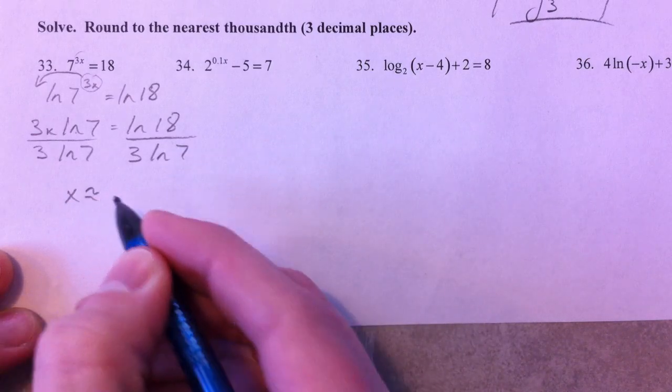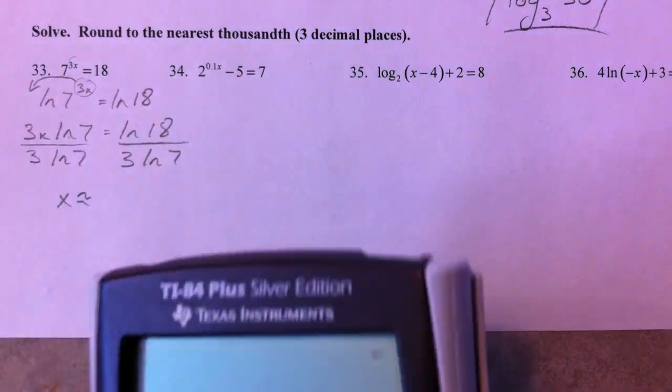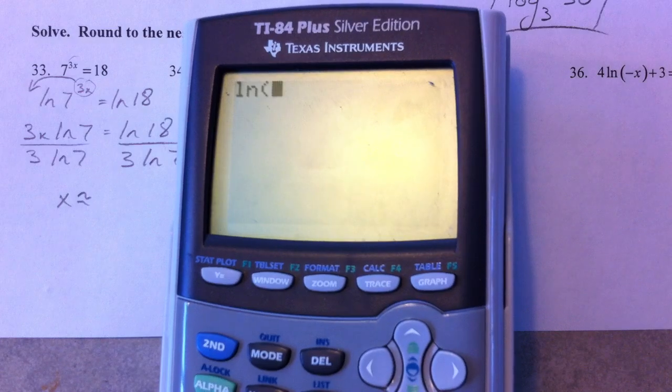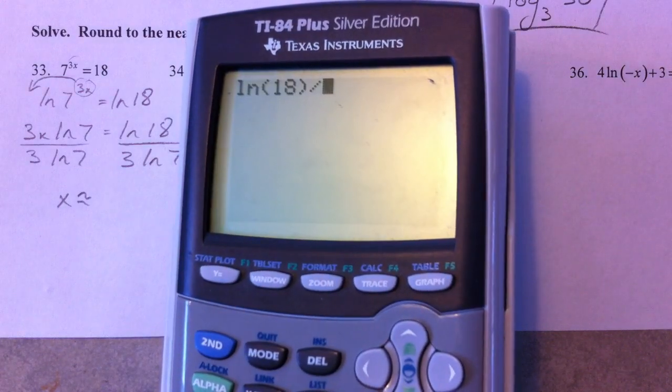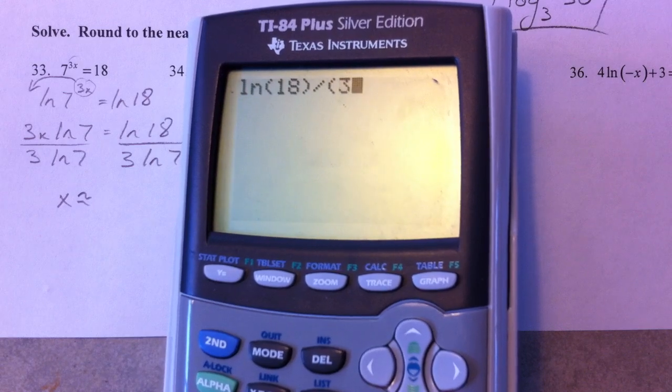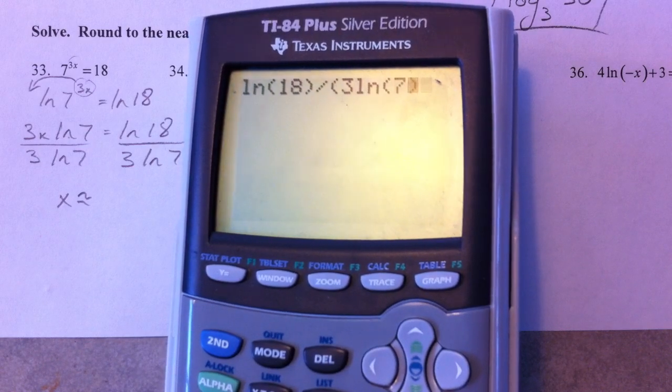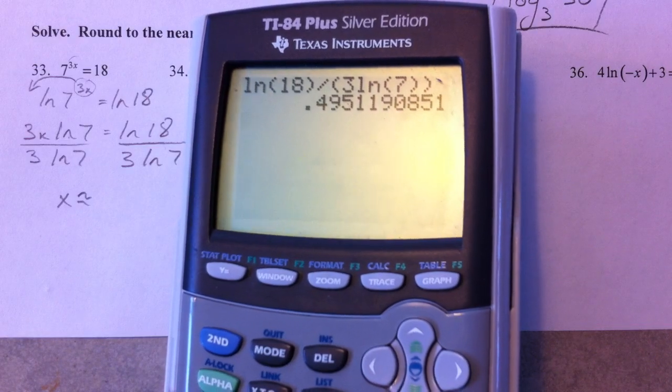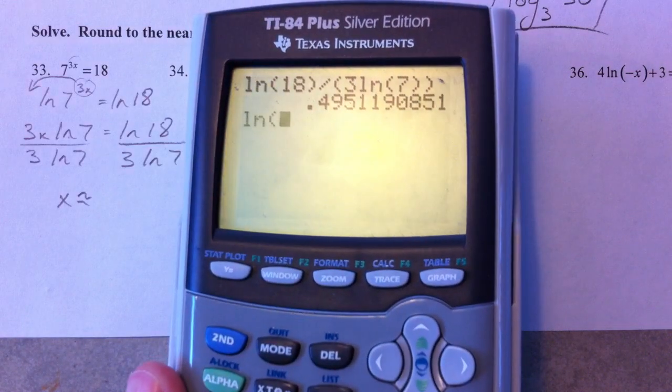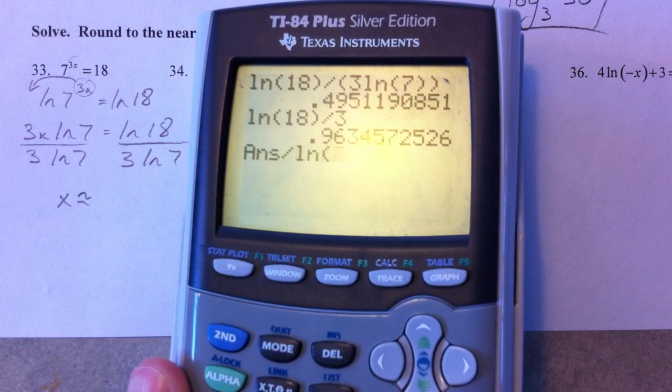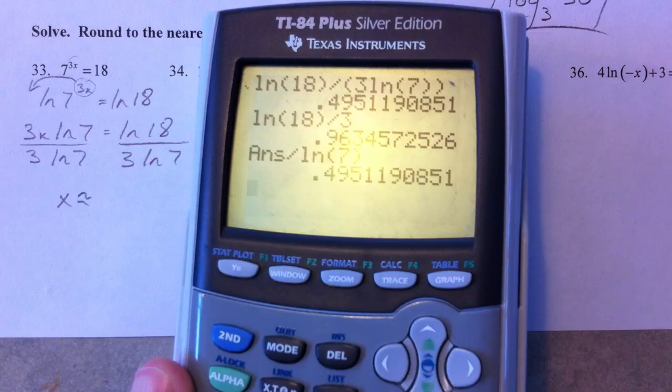And so, x is going to be approximately natural log of 18 divided by 3 times—and make sure you—3 times the natural log of 7. You want to multiply the stuff on the bottom first, and then do the division. You could also just do natural log of 18 divided by 3 divided by the natural log of 7, and you'd get the same answer.